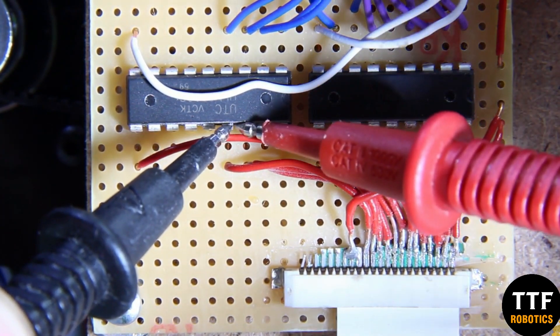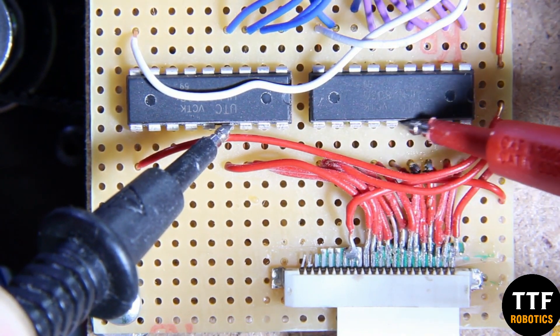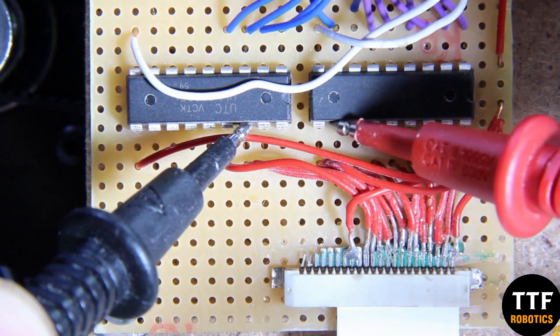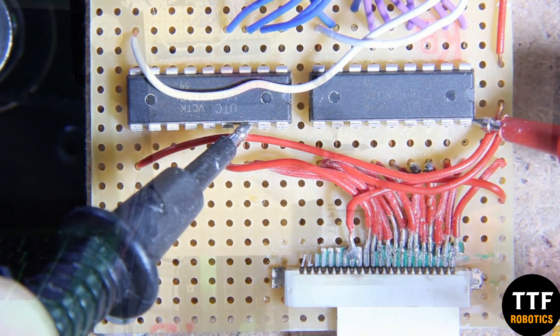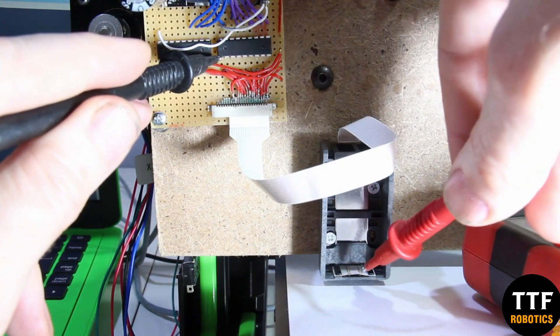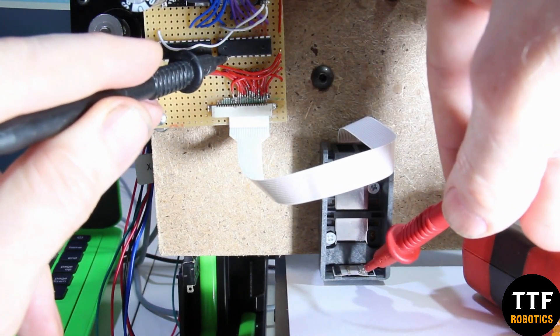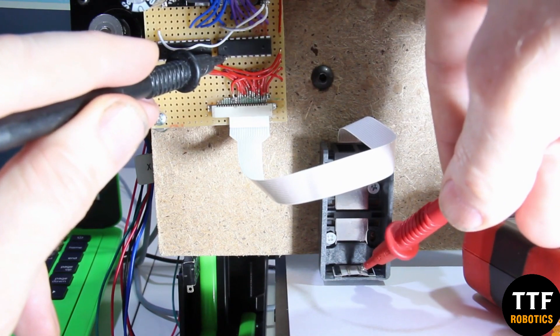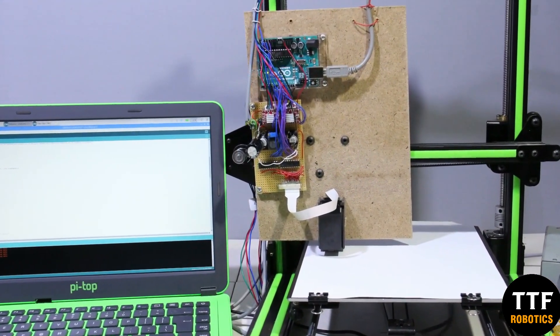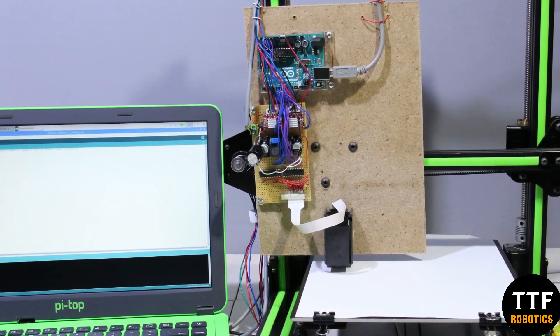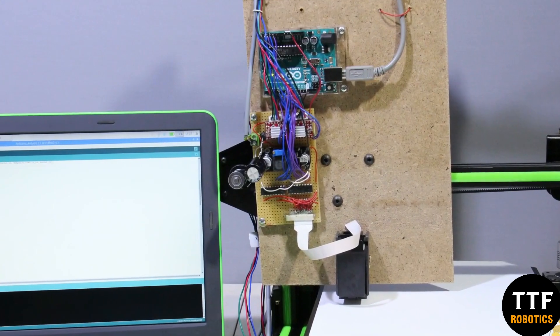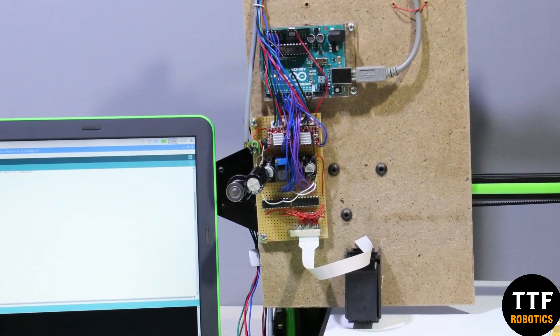After soldering, I used a continuity tester to check whether there are any short circuits between closely spaced pins. The electronics are mounted to the mechanics of an old 3D printer.